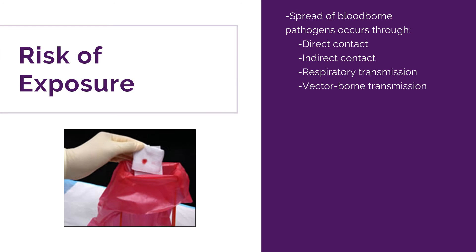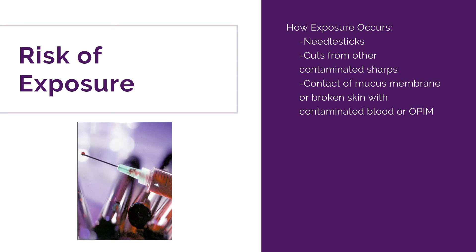The spread of bloodborne pathogens occurs through direct contact, indirect contact, respiratory transmission, or vector-borne transmission. Exposure occurs through needle sticks, cuts from other contaminated sharps, and contact of mucous membranes or broken skin with contaminated blood or OPIMs.